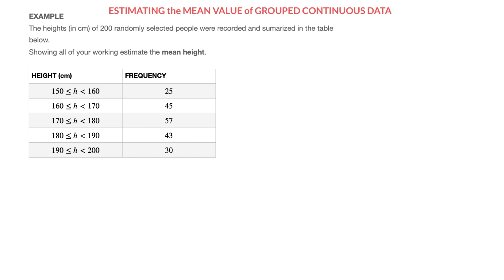First of all, because we're dealing with grouped continuous data, we can see that on each row of this frequency table we're given two things. First, we're given a class interval like the one we see here, and this interval tells us that on this first row we're dealing with heights going from 150 centimeters included up to 160 centimeters excluded.